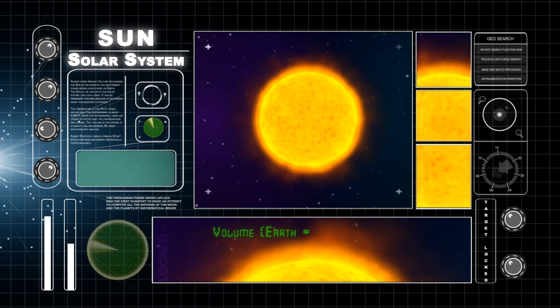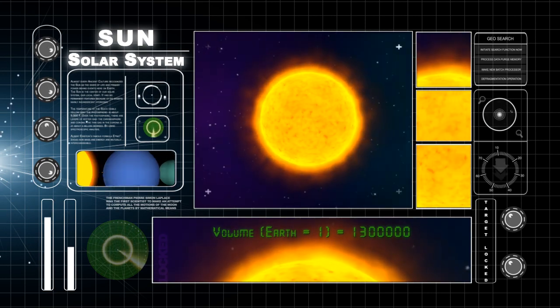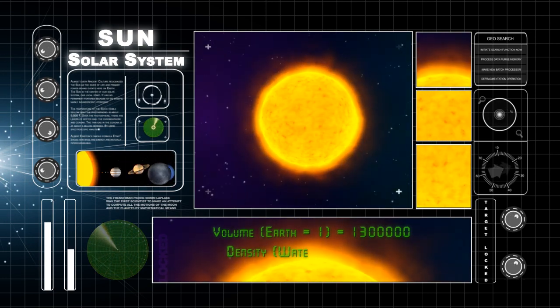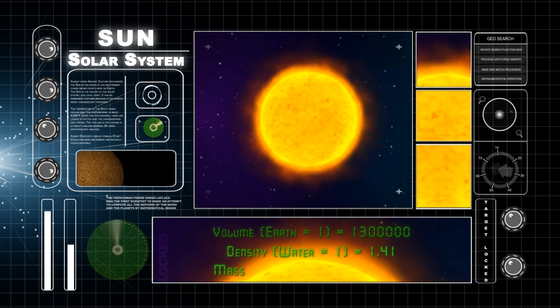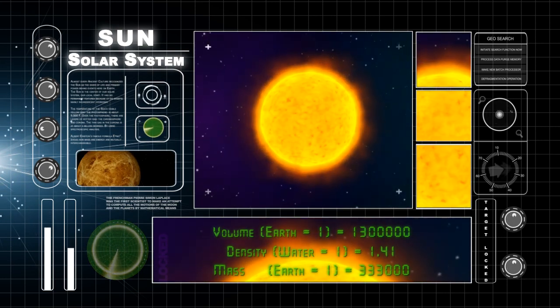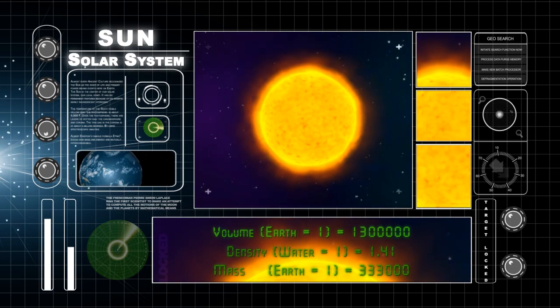The volume of the Sun is 1.3 million times the volume of Earth. Its density is 1.41 times the density of water. Its mass is 333,000 times the mass of Earth.